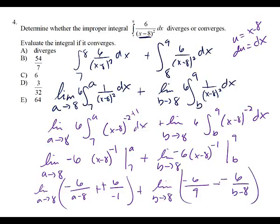When I put in the 8, I get zeros in the denominator — that's undefined. That makes it diverge. So the answer is choice A — it diverges. When the limit goes to something undefined like that, making it go to infinity, the integral diverges.